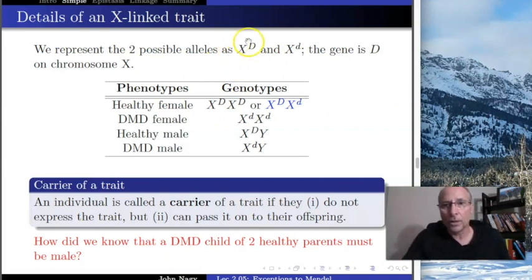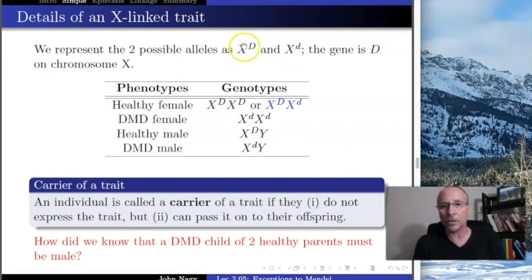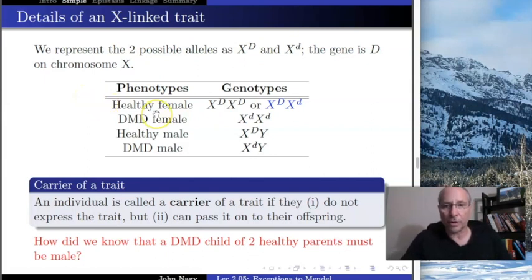There are two alleles: the allele that makes a normal healthy muscle, which is big D, and the allele that makes this dysfunctional muscle, which is little d. Big D is normal; little d is bad. That gives us a number of different genotypes and phenotypes.